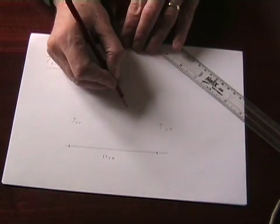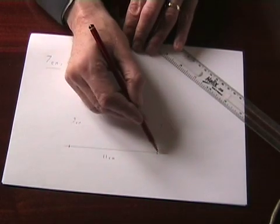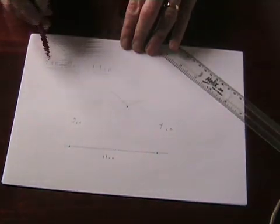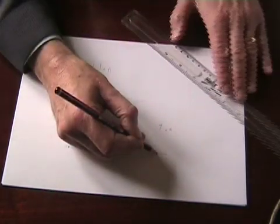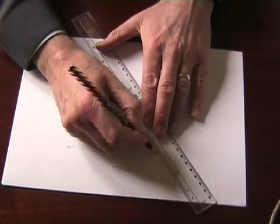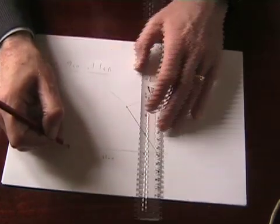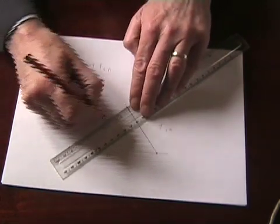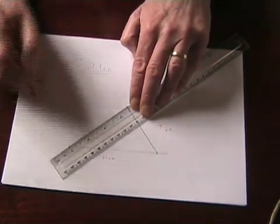So this point where they cross is 7cm from that end and 9cm from that end which gives me the completed triangle. So all I need to do now is join those three points for my side, side, side construction of a triangle.